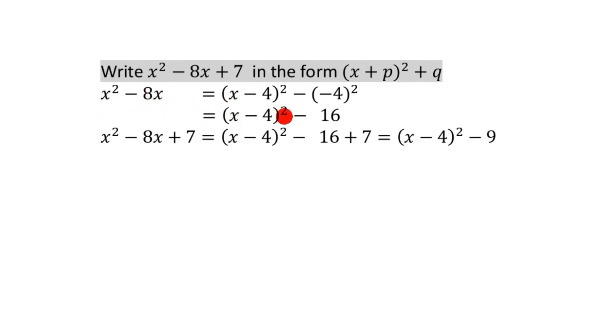But we really want to complete the square for the whole thing, including the plus 7. So let's put the plus 7 in there. And if you're going to put the plus 7 over there, you're going to have to add plus 7 over there onto this business that we got earlier on when you completed the square for x squared minus 8x. So that means this is equal to this. And if you simplify it, you get this. Minus 16 plus 7 is minus 9.